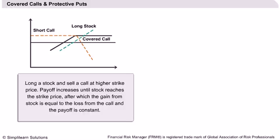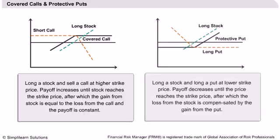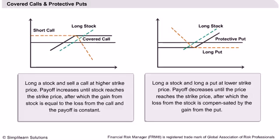In the case of a protective put, we purchase a put along with the stock. When the price of the stock decreases, the loss is compensated by the gain from the put, and the loss is limited to a constant amount. When the price increases, the put expires worthless and there is a gain from the stock, which becomes positive after sufficient movement to cover the initial outlay in buying the put.